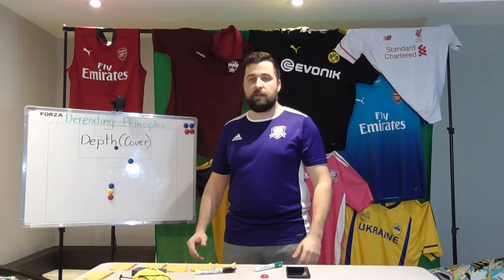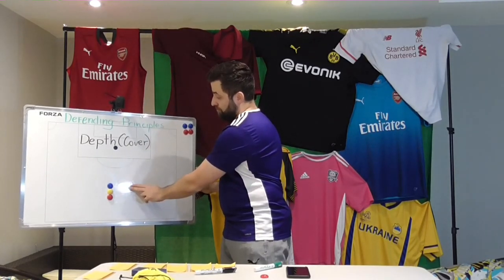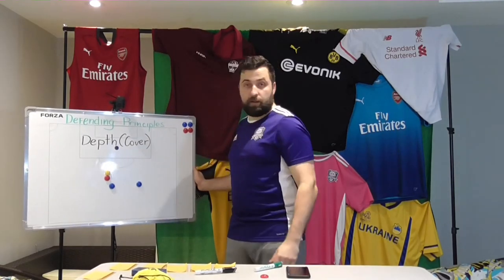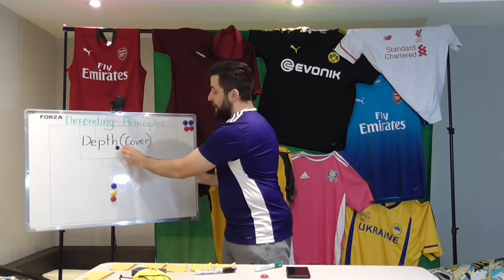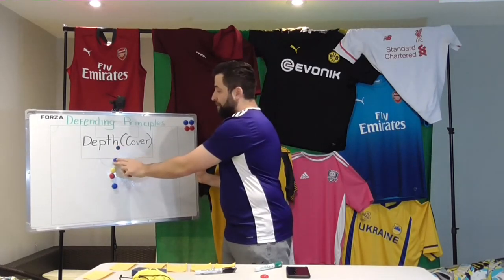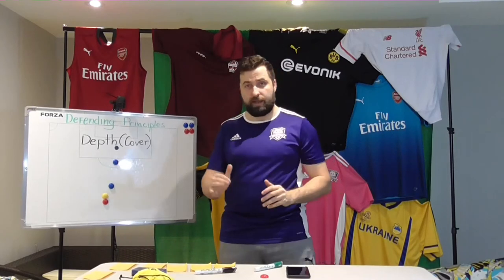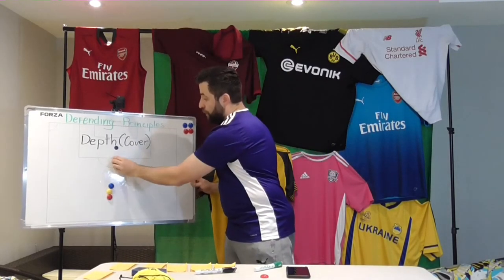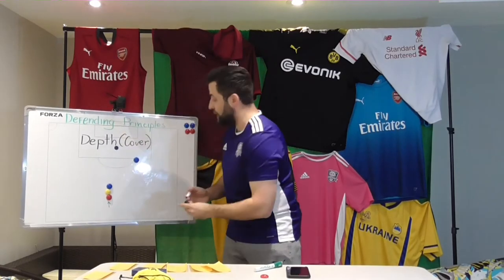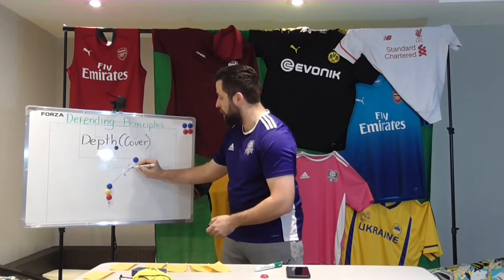A few things to note for depth and cover. The first is absolutely critical — position on the field. If the supporting player is in line with the defending player, he or she will not be useful if the attacker beats the defender. Similarly, being way too deep behind the defender is better than being in line, but still not good enough. Usually we use the rule of 45 and 10: the angle when supporting a player should be 45 degrees from the player in relation to the direction of the attacker's run, and the distance should be about 8 to 10 meters — roughly a goal width apart.